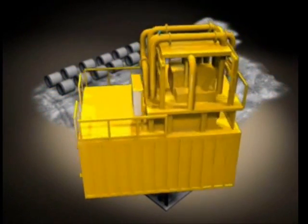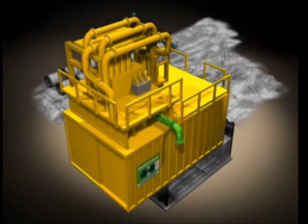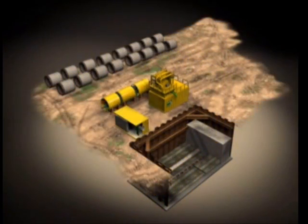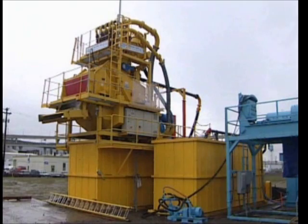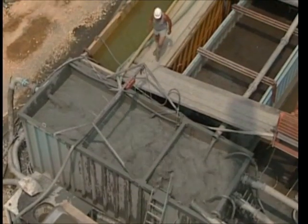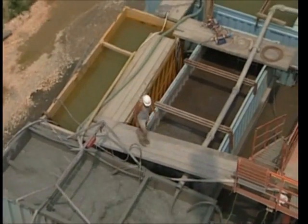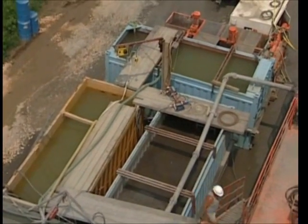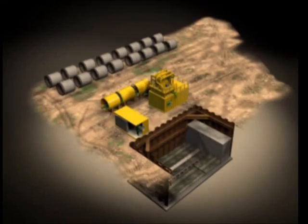A separation plant is used to separate the excavated material transported from the tunnel face by the slurry system. Bentonite suspension is used to support the working face and to convey the excavated material to the surface. After separation the bentonite suspension is then recalculated to the tunnel face.